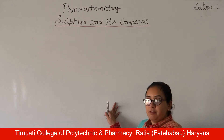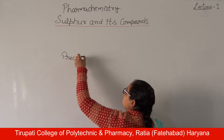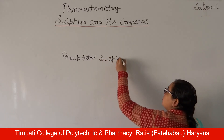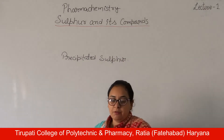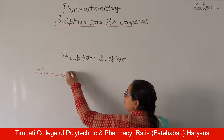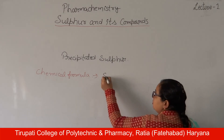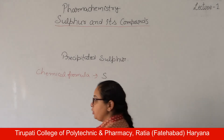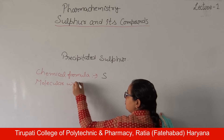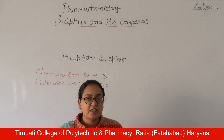There are three components of sulphur which we will study. First is precipitated sulphur. Its chemical formula is S and its molecular weight is 32.6.